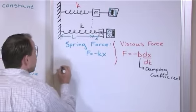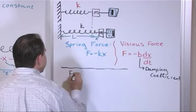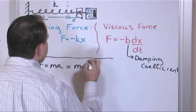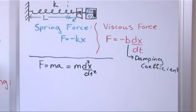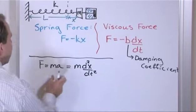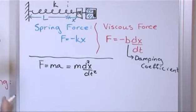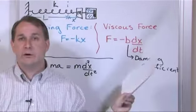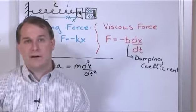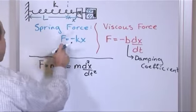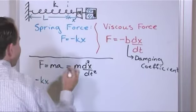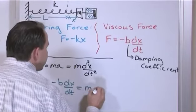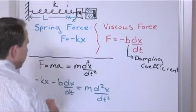Now we have both forces. Using F = MA = M·d²X/dt², we plug in the sum of all forces. We're not assuming gravity or friction on the table. The sum of forces gives: negative Kx minus B·dx/dt equals M·d²X/dt². Rearranging: M·d²X/dt² + B·dx/dt + Kx = 0. That's our second differential equation.